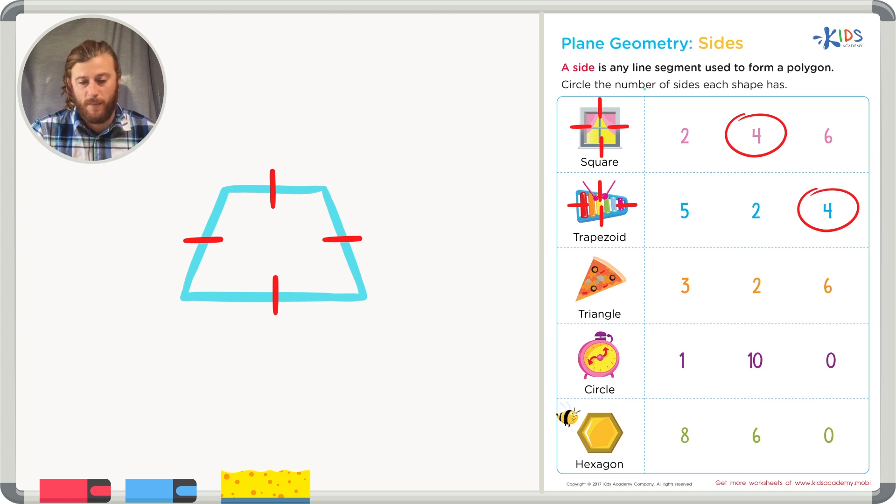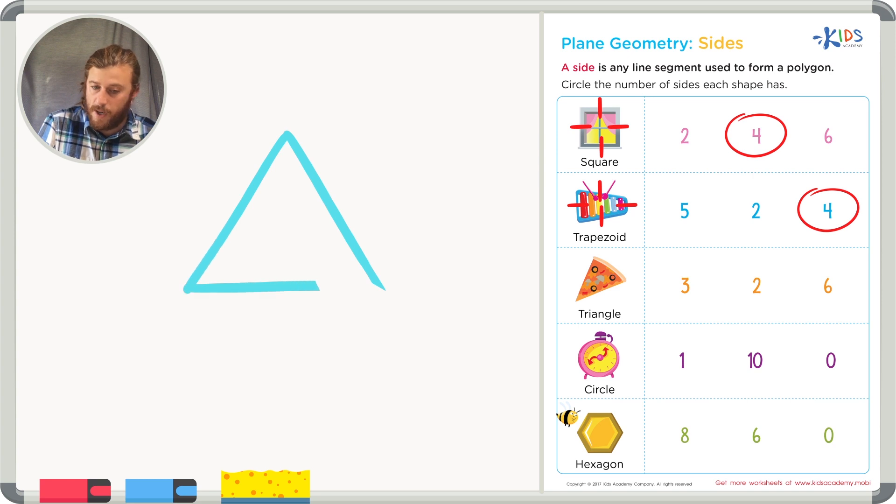Let's look at the next example, a tasty pizza. I mean a triangle. Let's draw a triangle on my worksheet, and we'll compare it to the triangle on the worksheet we have. My triangle has one, two, three sides.